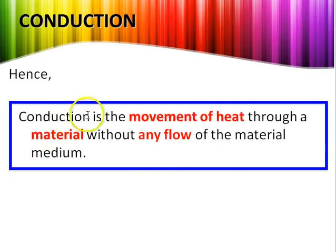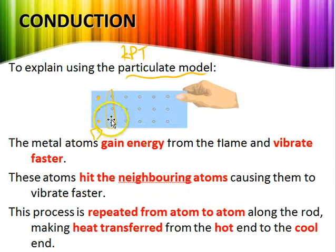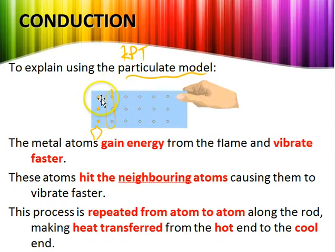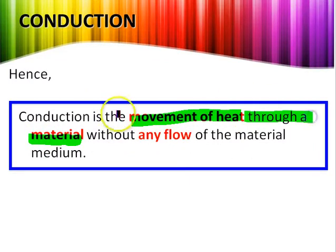Conduction is the movement of heat through a material without any flow of the material medium. The atoms do not flow from one end to the other. Instead, through collision, heat is transferred — each atom vibrates faster and passes energy to the next, causing those atoms to vibrate faster in turn. That is why conduction involves no flow of the material medium.